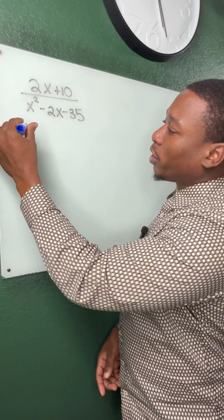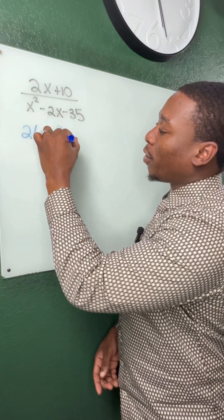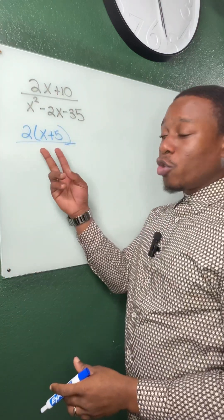So in the top, we're going to take out a GCF of 2. We're left with x plus 5. Can't simplify this numerator anymore.